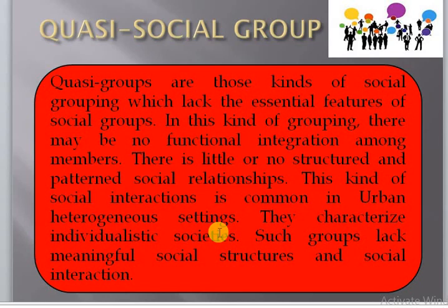Quasi groups are those kinds of social groupings which lack the essential features of social groups. In this kind of grouping, there may be no functional integration among members. There is little or no structured and patterned social relationship. This kind of social interaction is common in urban heterogeneous settings. They characterize individualistic society, and such groups lack meaningful social structure and social interaction.